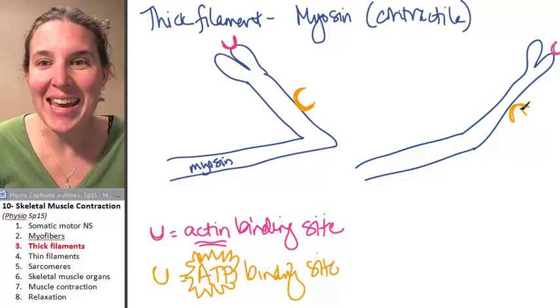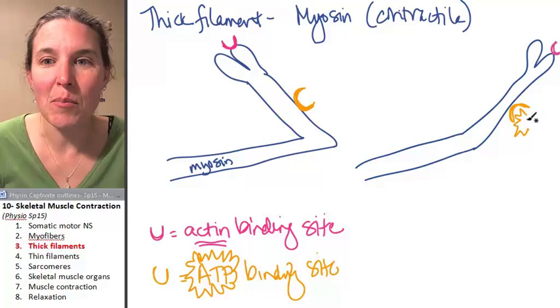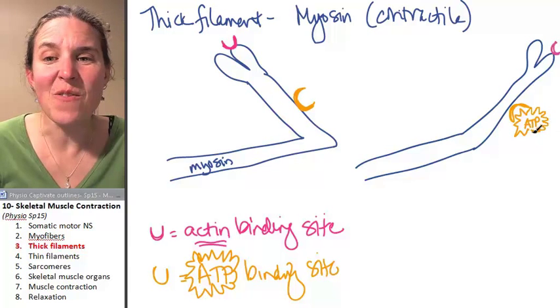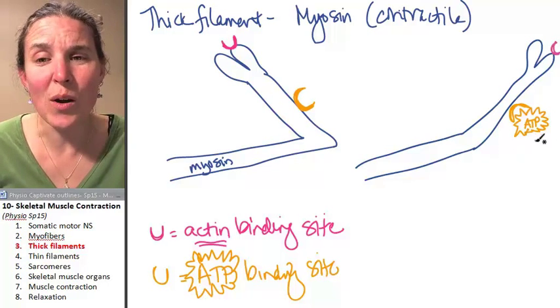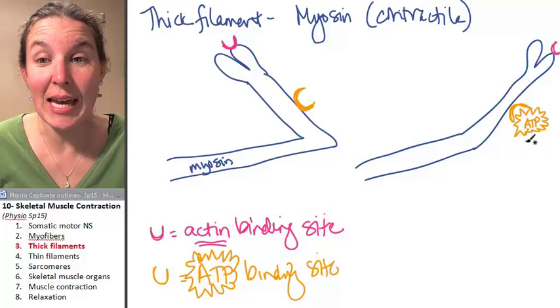The only way to cock the myosin head is to have ATP bind to its binding site. And, in fact, what happens is the ATP binds.